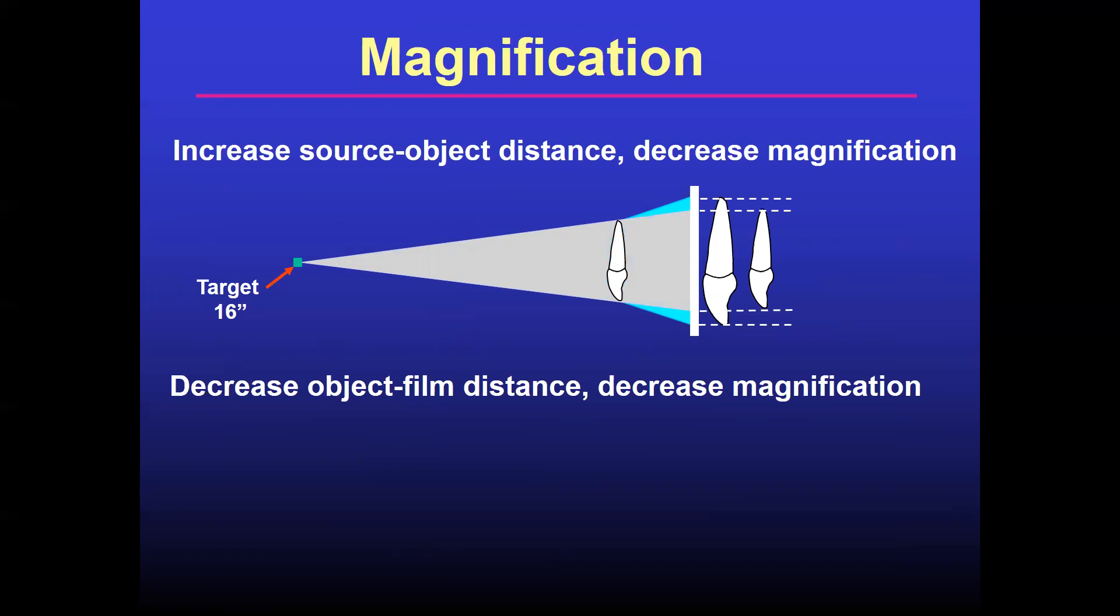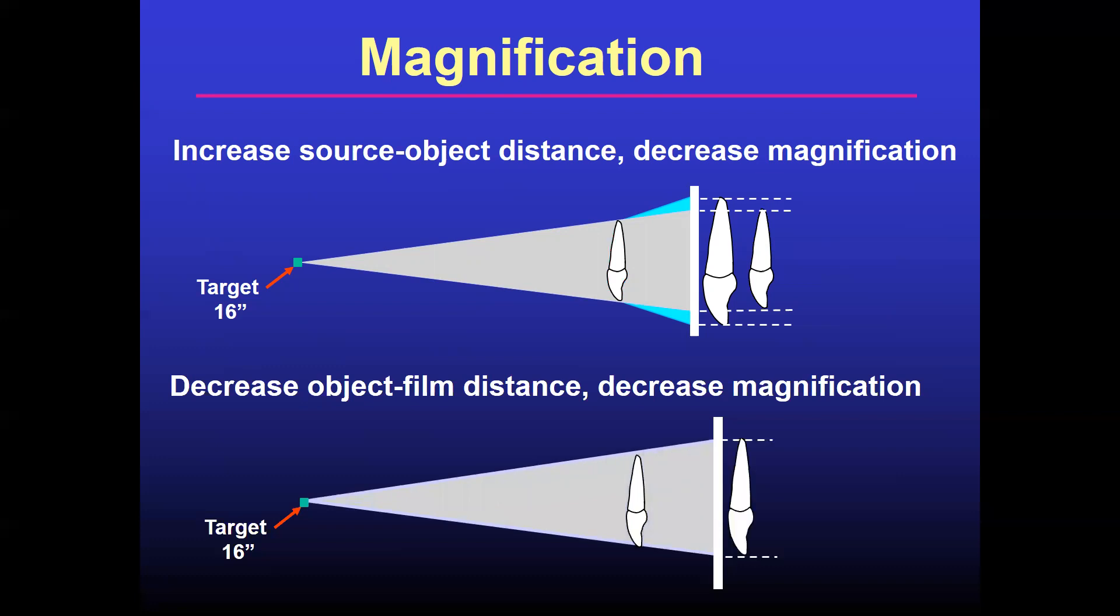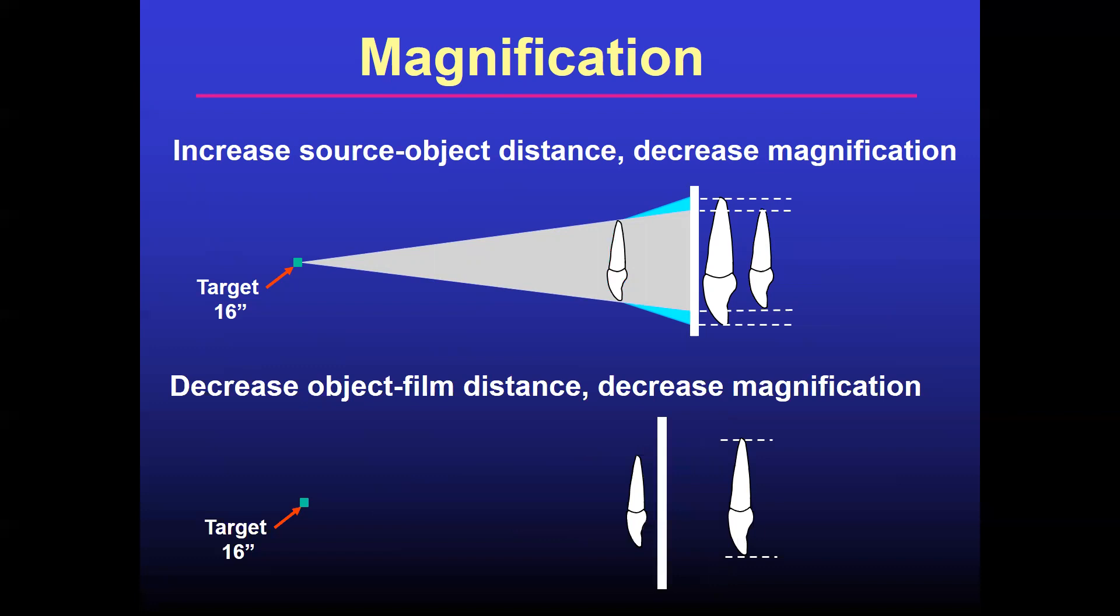The other thing is decreased object film distance. It also causes decreased magnification. The object is the tooth and the film is there. So when you decrease the distance between the object and the film, you will get less magnification. Object and film distance. When you keep the object and film near to the object, the magnification is reduced.